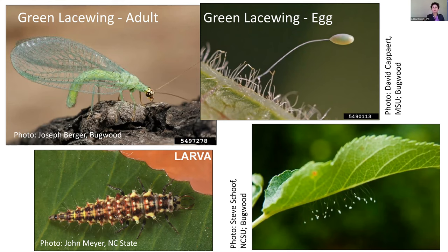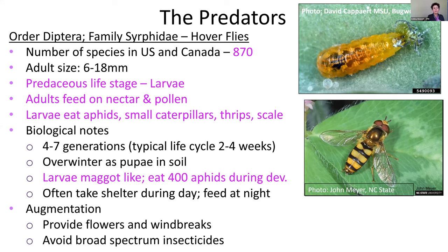Hoverflies are another really important predator in the landscape. We have about 870 species in North America, and it's the larval stage that does all the work — feeding on aphids, small caterpillars, and scale. The adult stage exclusively feeds on nectar and pollen, so having floral resources in your garden is important to support this beneficial insect. The larval stage can eat about 400 aphids during its development.